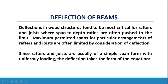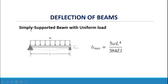At point X or distance X, we have the deflection Y. Deflections in wood structures tend to be most critical for rafters and joists where span-to-depth ratios are often pushed to the limit. Maximum permitted spans for particular arrangements of rafters and joists are often limited by consideration of deflection. Since rafters and joists are usually of a simple span form with uniform loading, the deflection takes the form of the simply supported beam with uniform load equation.